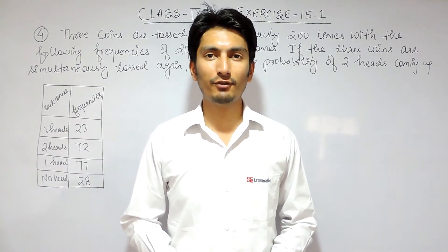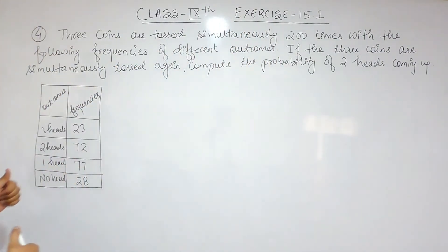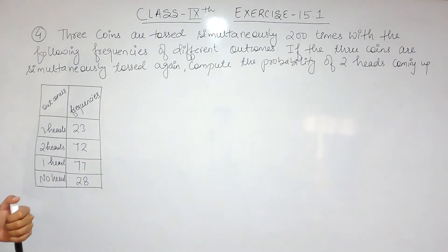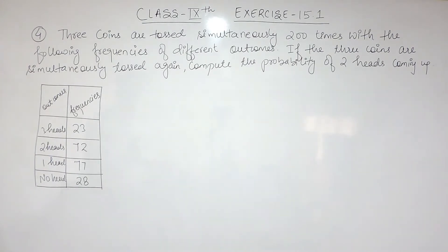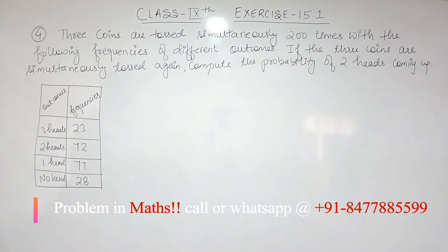Hello everyone, we are from True Math and in this video we are going to solve question number four of exercise 15.1. The question says three coins are tossed simultaneously 200 times with the following frequencies of different outcomes. If the three coins are simultaneously tossed again, we have to find the probability of two heads coming up.